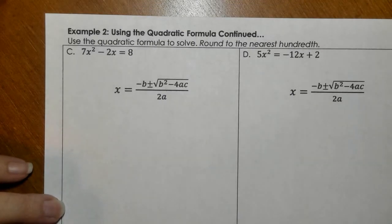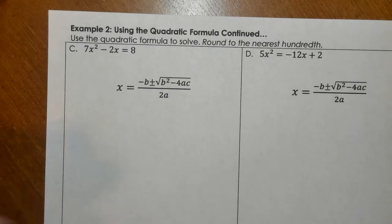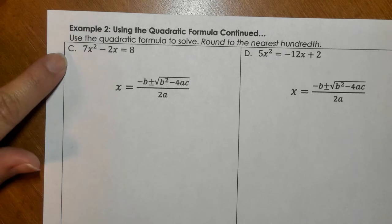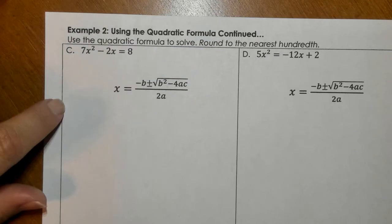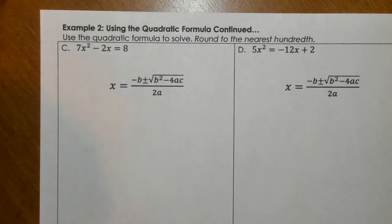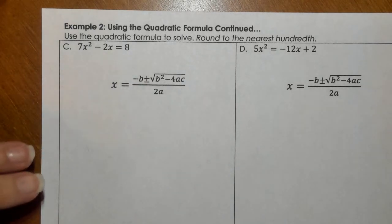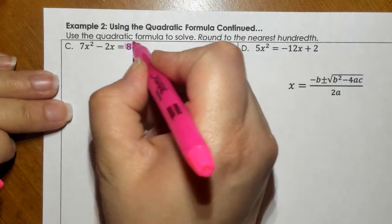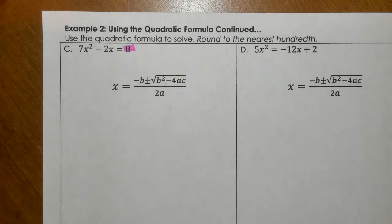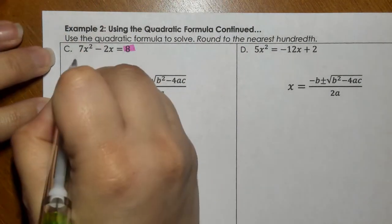Alright, so for the second part of this, basically example two continued, we're going to use the quadratic formula to solve because we can't factor this, and we're going to round to the nearest hundredth. So first and foremost, do we have standard form? No, this does not say equals zero, so let's rewrite this.